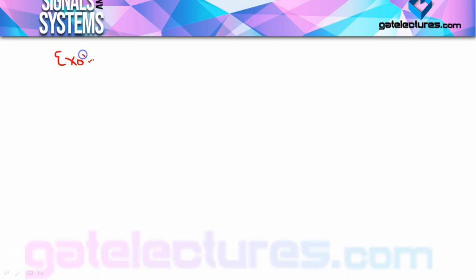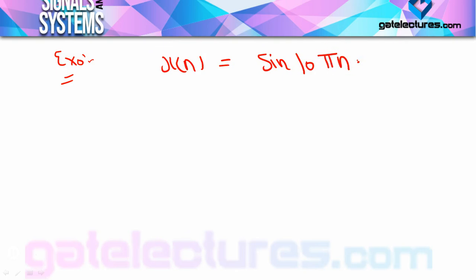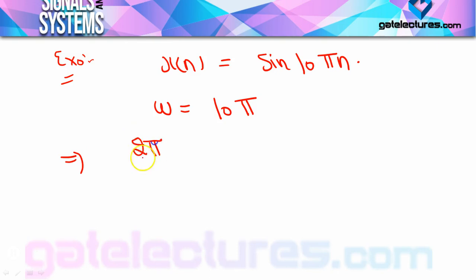Now let's analyze sine and cosine signals to check how we can determine if they are periodic or not, just as we studied for continuous time signals. An important point here: in continuous time, individual sine, cosine, and Euler signals are always periodic, but in discrete time that is not the case. You need to check individual signals. The method is: compute 2π/ω = N/k.